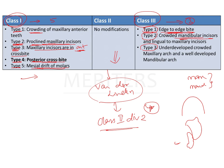Class 3 type 3 shows an anterior crossbite because there is underdevelopment of the maxillary arch and well development of the mandibular arch, meaning the mandibular arch is more prognathic and prominent. So class 3 malocclusion can appear as: an edge-to-edge bite in type 1, a normal anterior bite with crowding in type 2, or an anterior crossbite due to a prognathic mandible in type 3.